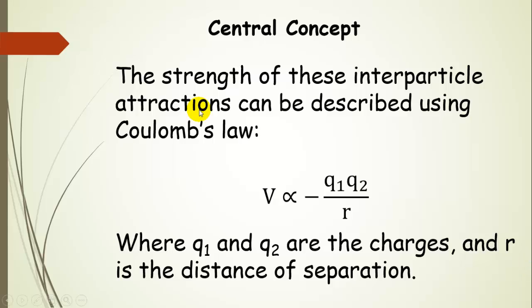Basically, we can describe the strength of attraction using Coulomb's law. So here's V. This is the interparticle potential, and it's related to the charges on the particles and the distance between them. This negative sign here indicates that it's an attraction as opposed to a repulsion. So opposite charges attract. We have a negative potential, which is an attractive potential.